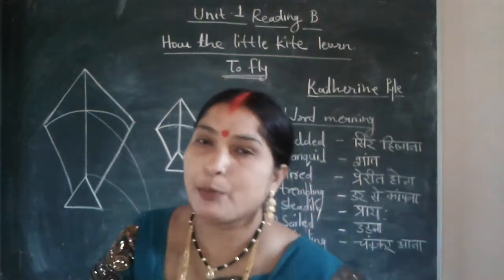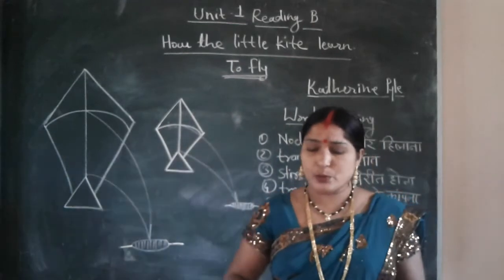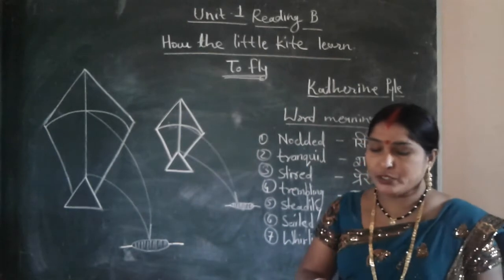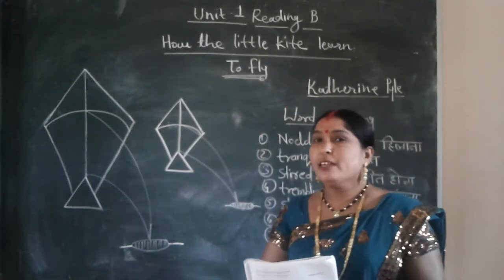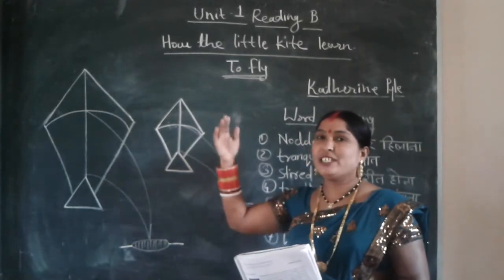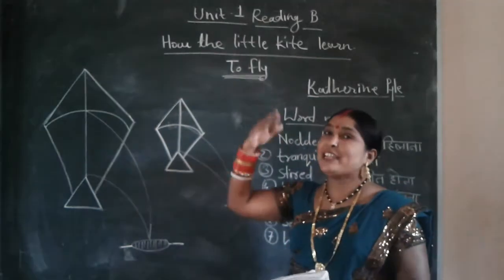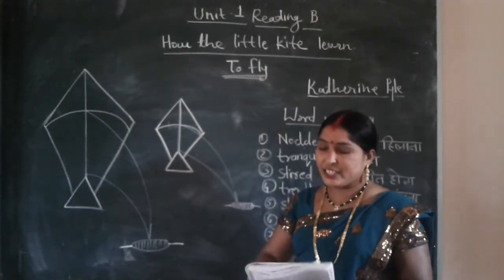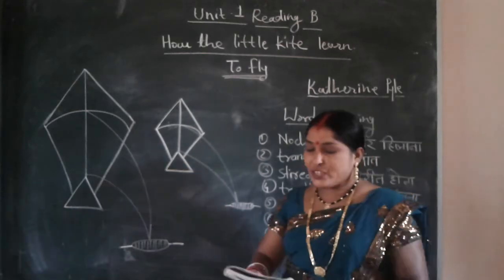Now we will start the poem. 'I never can do it,' the little kite said, as he looked at the others high over his head. When the big kite is saying to the little kite to fly over the sky, the little kite has a fear. 'No, I can't. I know I shall fall if I try.'